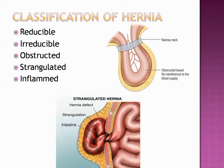In obstructed hernia, the intestine is obstructed either from within or from outside, but there is no interference to the blood supply of the bowel. Here you can see that the blood supply to the bowel remains normal. However, if there is interference to the blood supply, that hernia is called strangulated hernia. In strangulated hernia, the blood supply is seriously impaired.